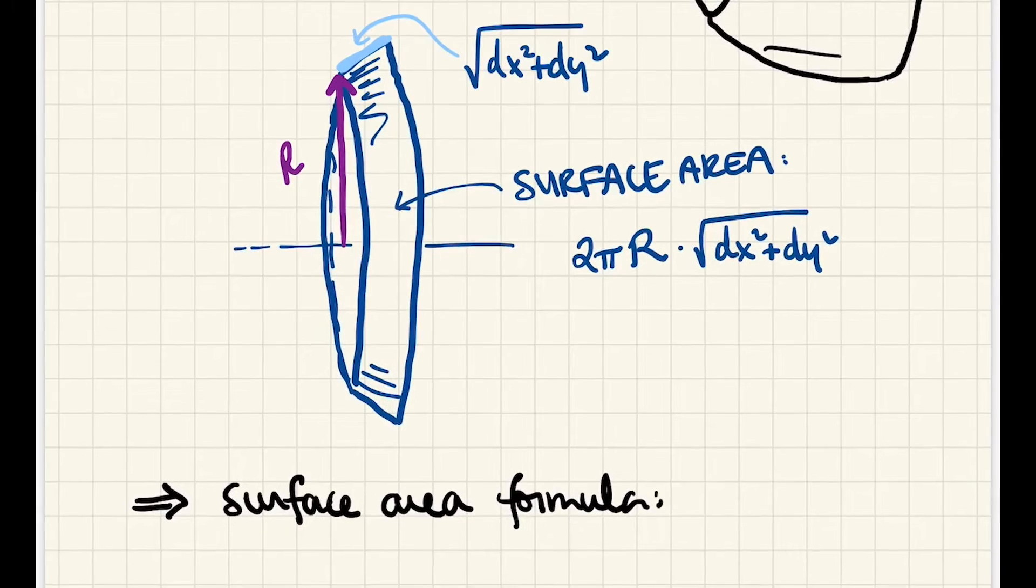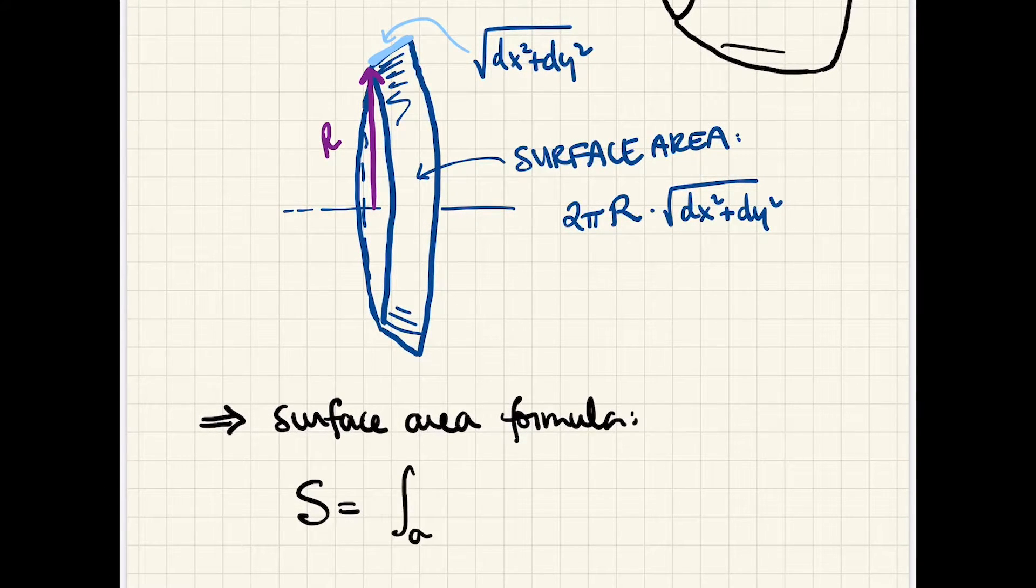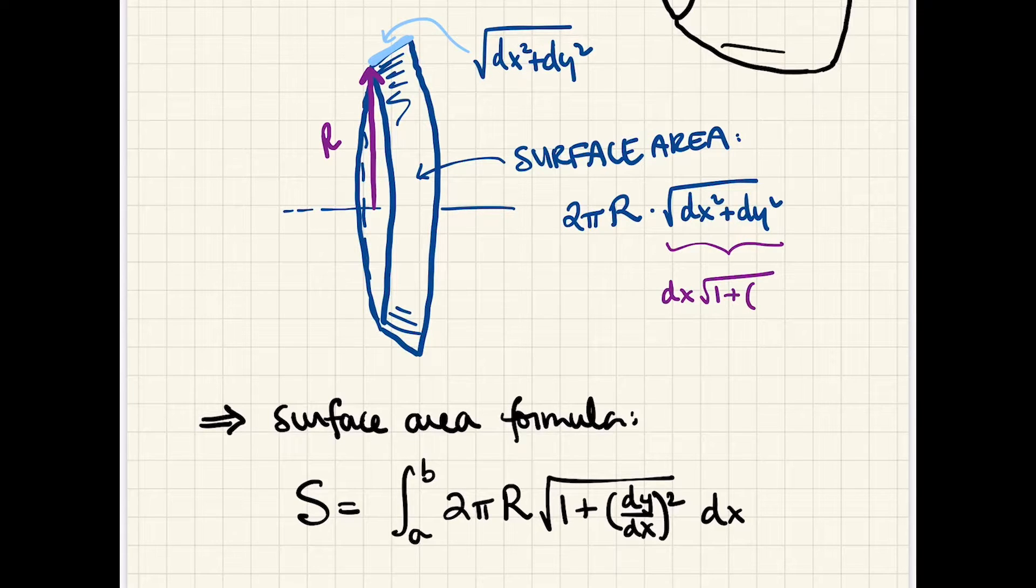So our formula for surface area is s is equal to the integral from, say, a to b of 2 pi times the radius and 1 plus the derivative squared dx, and we get that again, as we did before up here, by factoring dx out of the radical and then commuting it over to the far right side of the integral.